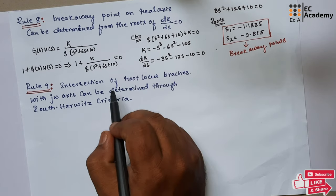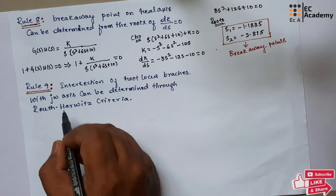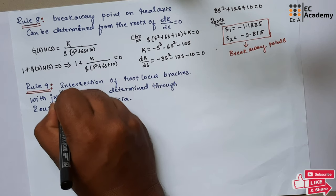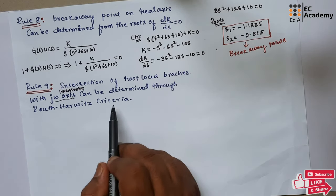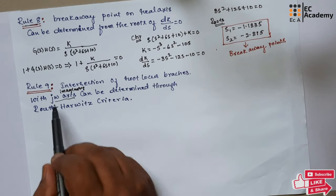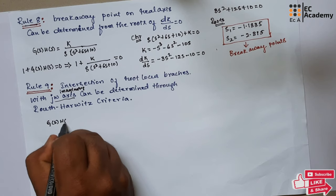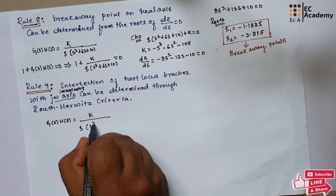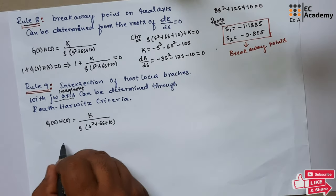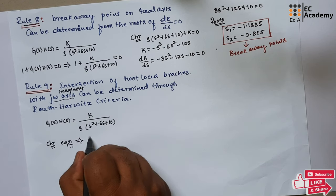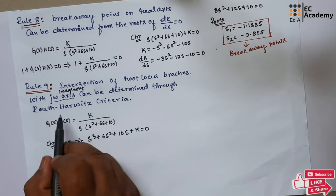Rule 9 is about the intersection of root locus branches with the jω (imaginary) axis. This can be determined using Routh-Hurwitz criteria. Taking the same example, the characteristics equation is S³ + 6S² + 10S + K = 0. Let us apply Routh-Hurwitz criteria.